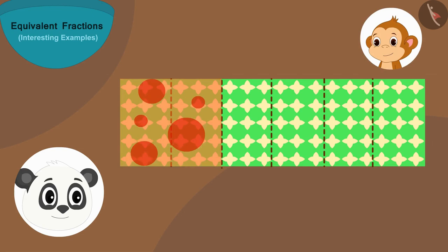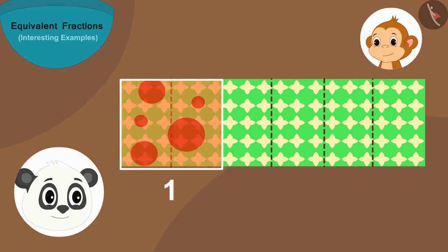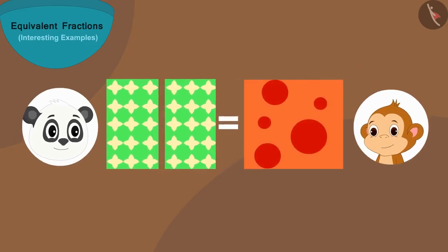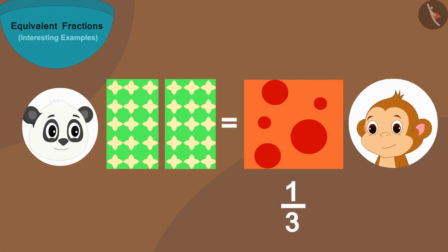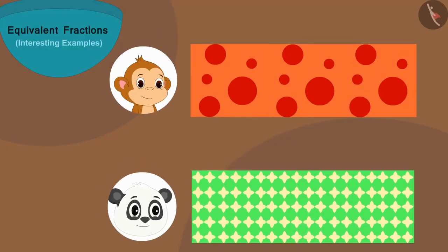Now he sees that two parts of his cloth are equal to one part of Babban's cloth. Do you think the same? This means one-third part of Babban's cloth and two-sixth part of Golu's cloth are equal.